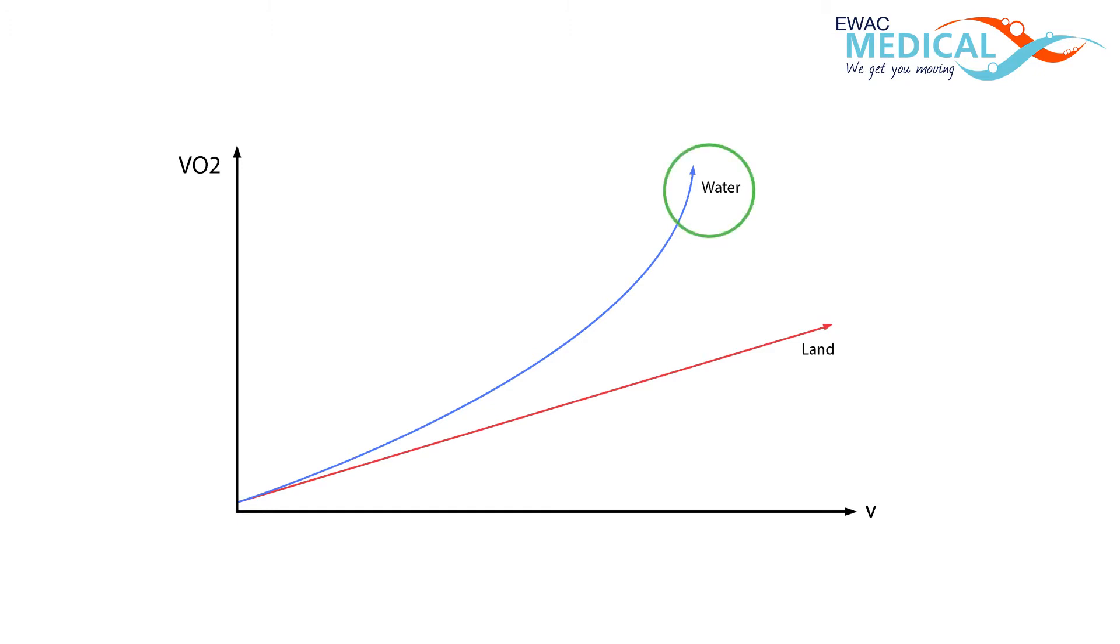If we compare running in water with running on dry land, clearly the amount of labour increases much faster with increasing speed.